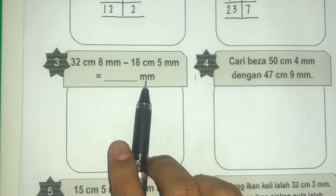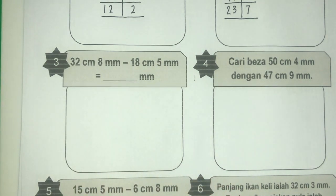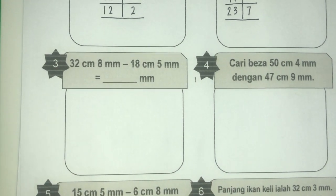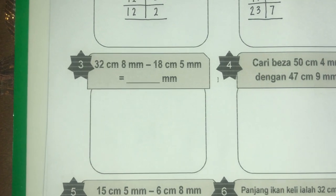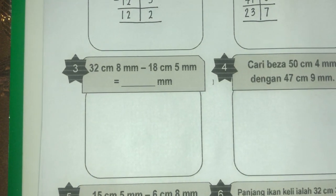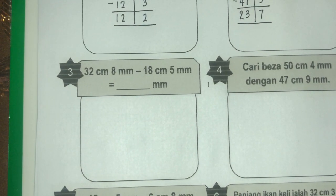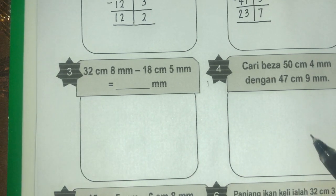Tapi jawapan dia nak dalam mm sahaja. Macam tadi dia nak 2 jawapan — 1 dalam cm, 1 lagi dalam mm. Sekarang ni dia nak 1 jawapan sahaja dalam mm. Bermaksud kita kena buat penukaran unit selepas kita selesaikan langkah pertama.